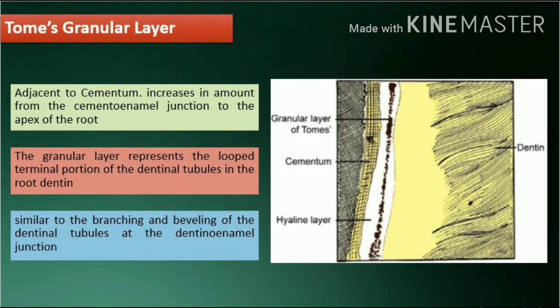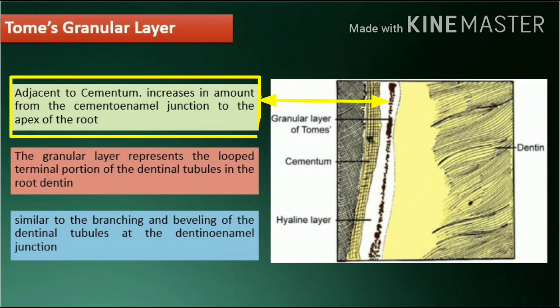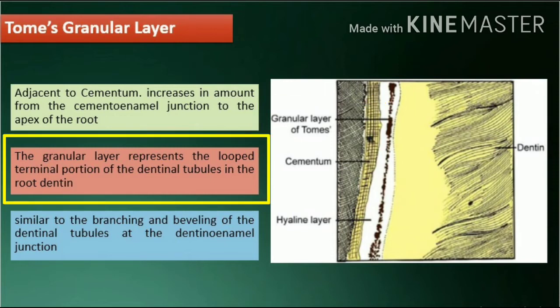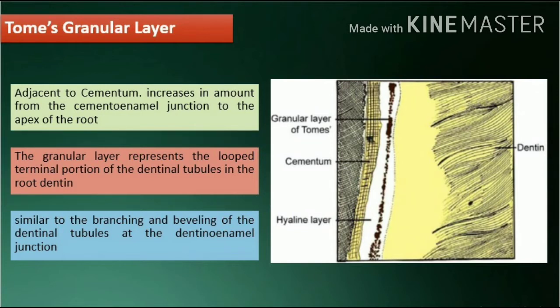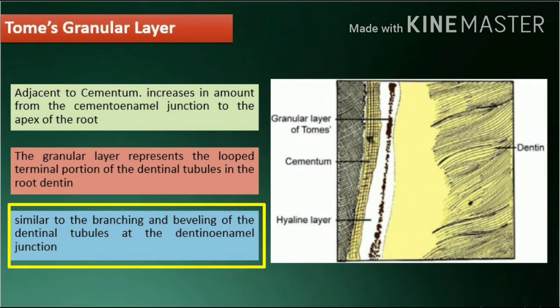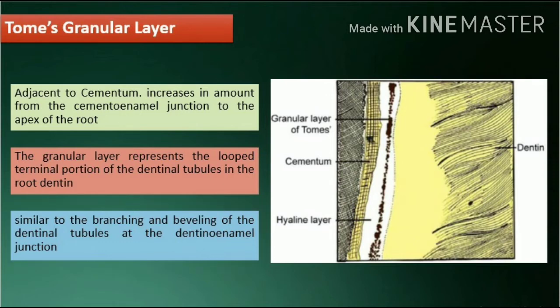Granular layer of Tomes: this is a granular layer seen under transmitted light adjacent to cementum. This zone increases in amount from the cementoenamel junction to the apex of the root. The granular layer represents the looped terminal portion of the dentinal tubules in the root dentin. The cause of development of this zone is possibly similar to the branching and beveling of the dentinal tubules at the dentinoenamel junction.